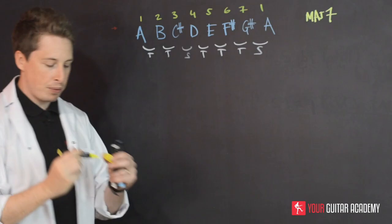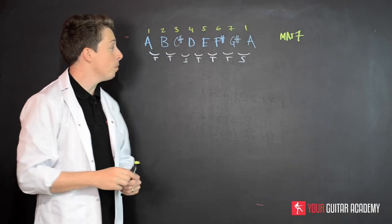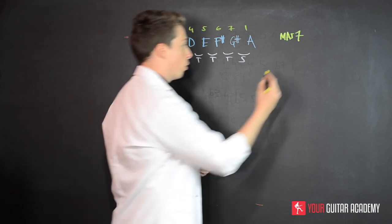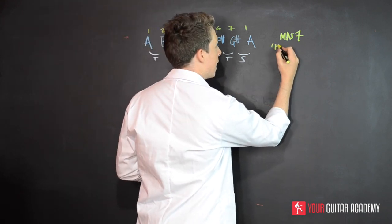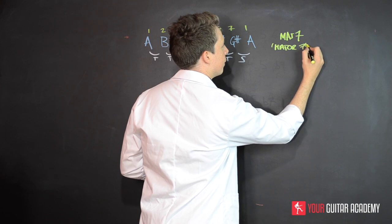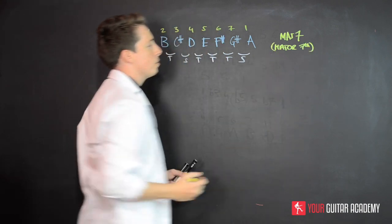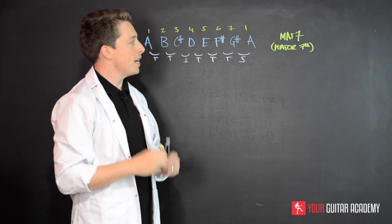For a major seven, you're going to see it written probably something like this: M-A-J for 'major' and then 7. That's probably the most common form of shorthand for major seven. Of course, this means major seventh, which I'm just putting in brackets here.